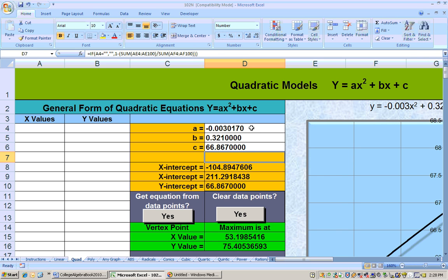Here I am, and I just typed in those coefficients right here for A, B, and C. My quadratic coefficient, my linear coefficient, the number in front of the X is 0.321, and my constant at the end is 66.867.